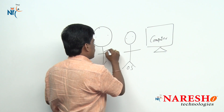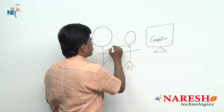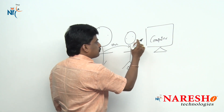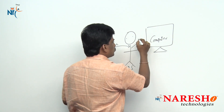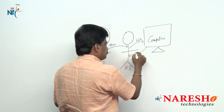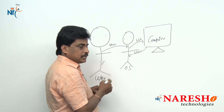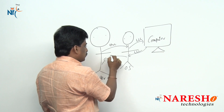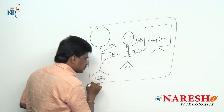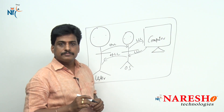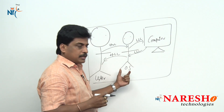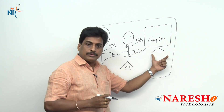A user speaks to the operating system in high-level language. The operating system converts this into low-level language and talks to the computer in low-level language. Then it converts the response back into high-level language. That is the perfect definition of an operating system — it is an interface between a user and a computer.